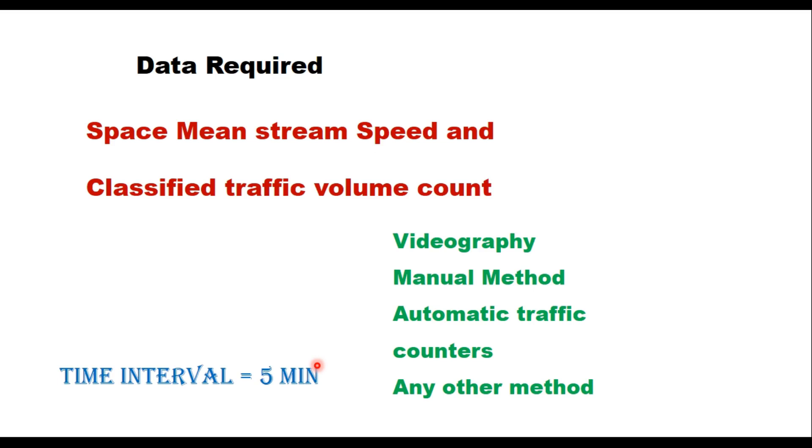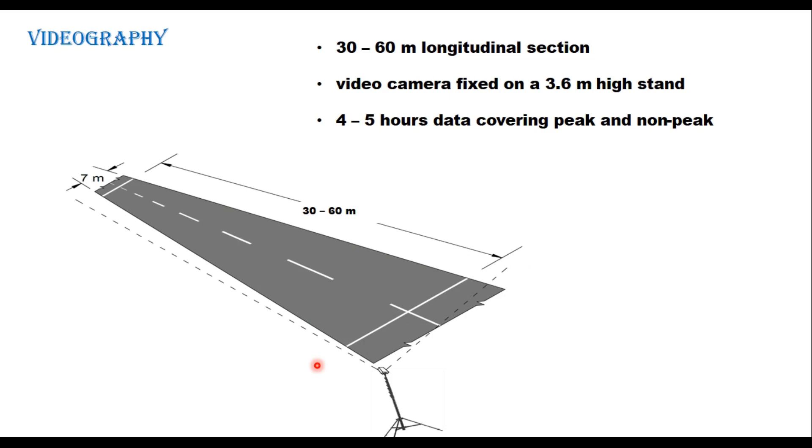To collect the traffic data in field, it is required to identify a section for videography. Generally we consider a section of 200 to 500 meter length. On urban street it can be 200 meter or maybe 100 meter, but on interurban roads it should be around 400 to 500 meter which is uniform in characteristics.